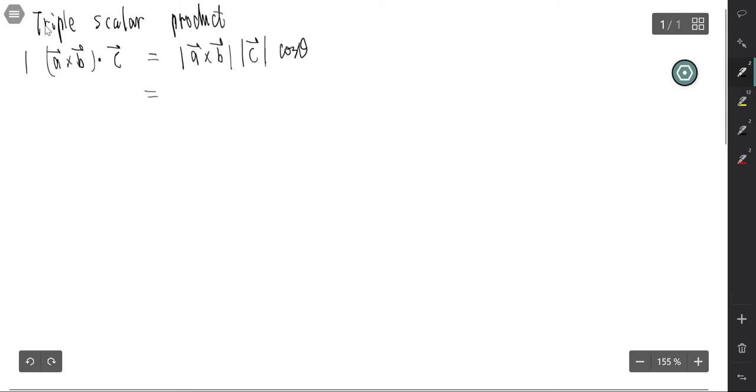Actually, it's a dot product of C and A cross B. So we can write as C dot A cross B.